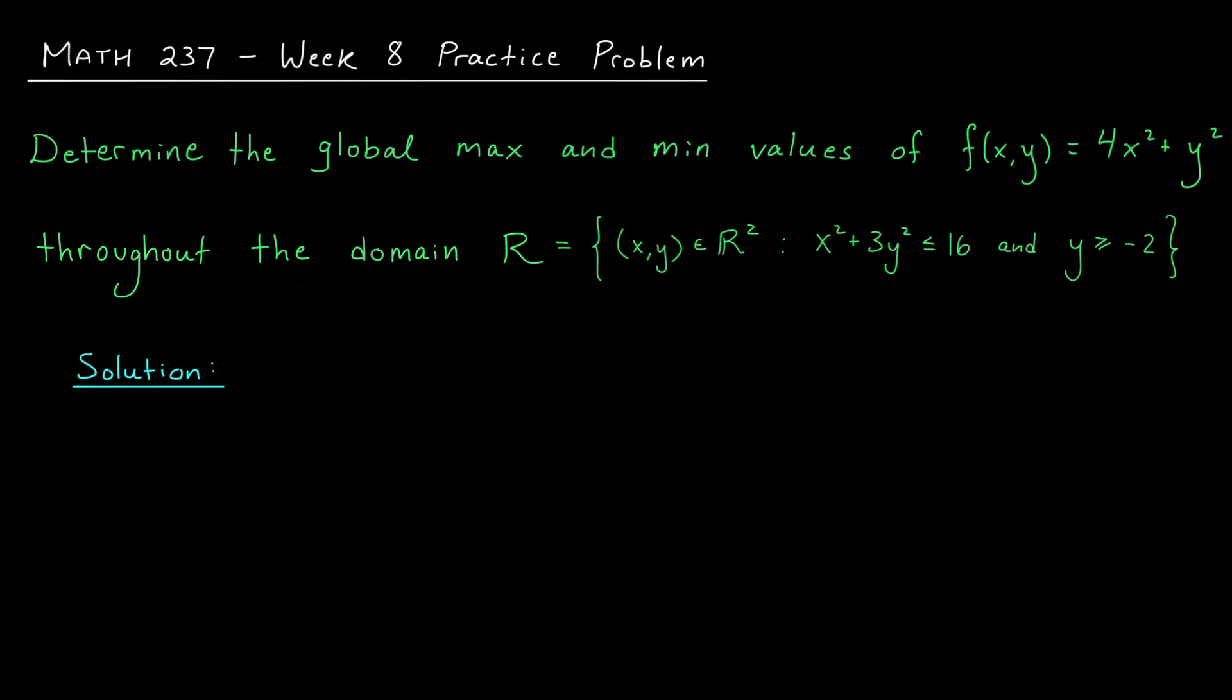However, we're only allowed to consider inputs from the set R. Here R consists of all points (x,y) satisfying the constraints x squared plus 3y squared is less than or equal to 16, and y is greater than or equal to minus 2. Now at this point, I encourage you to pause the video and try this problem for yourself. We'll take up the solutions in a moment.